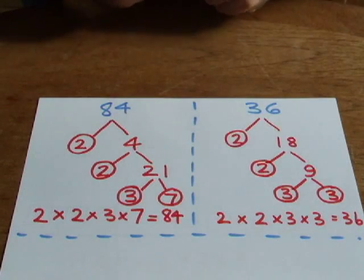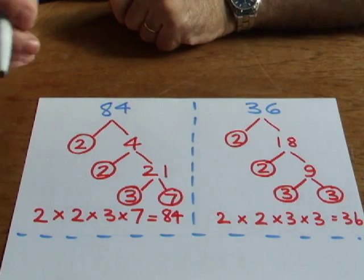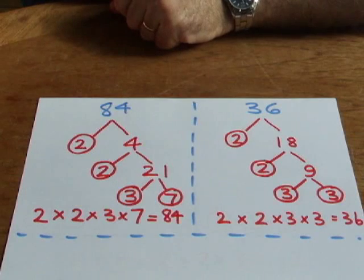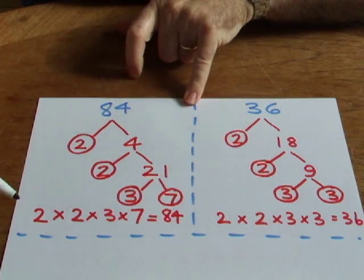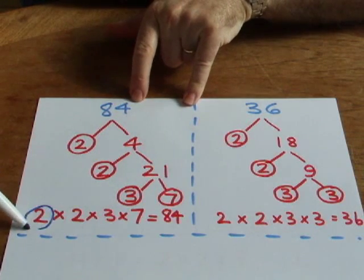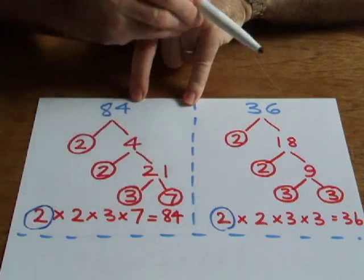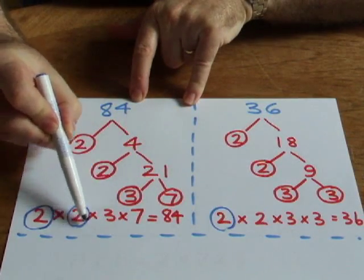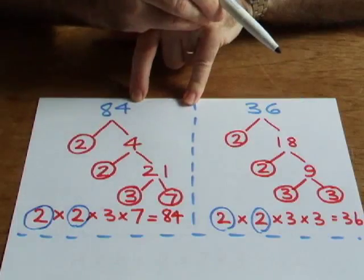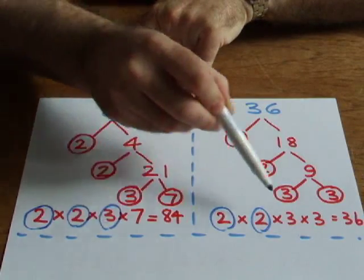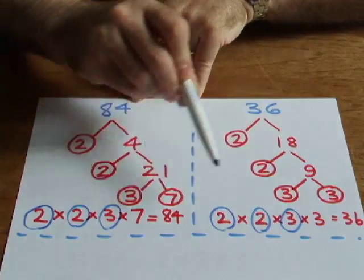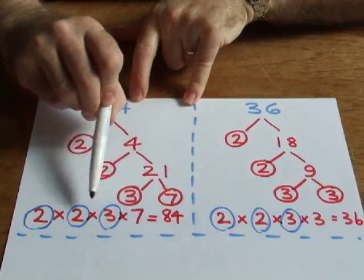Now, to find the highest common factor, what we have to do is find the primes that are in common in both those numbers. So you can see here, there's a 2 here and here. There's also another 2 here and here. In the same way we have a 3 there and there as well. There's no 7 in this. There's no other 3 in here.